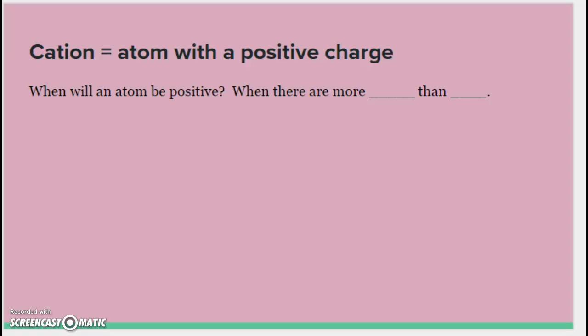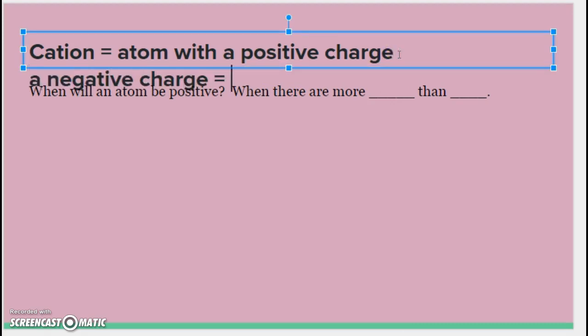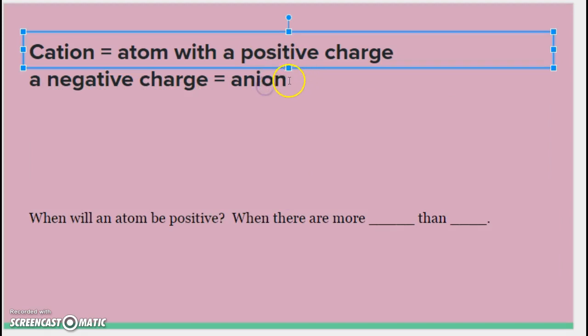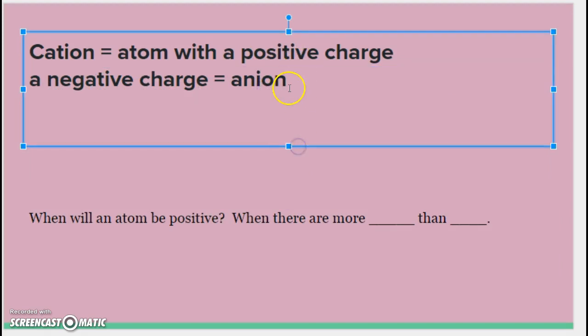So cation equals an atom with a positive charge. Now just to review, what do we call an atom with a negative charge? That's an anion. And what about if we just say it has a charge in general? We would say any atom with a charge is called what? It's called an ion.